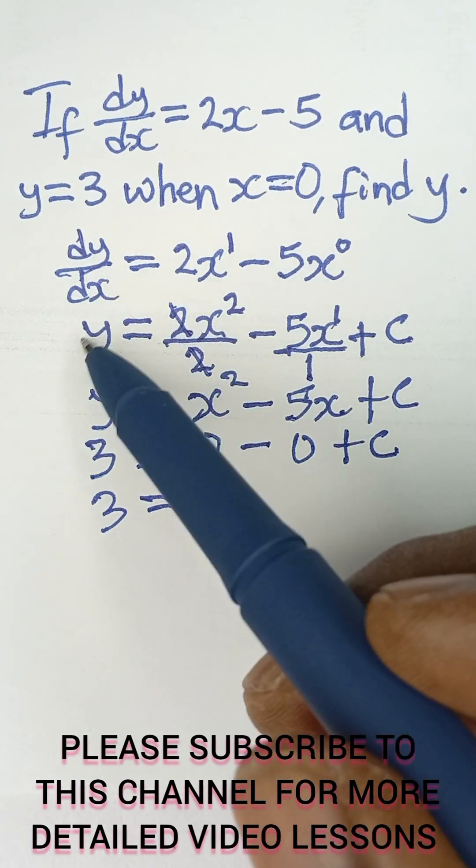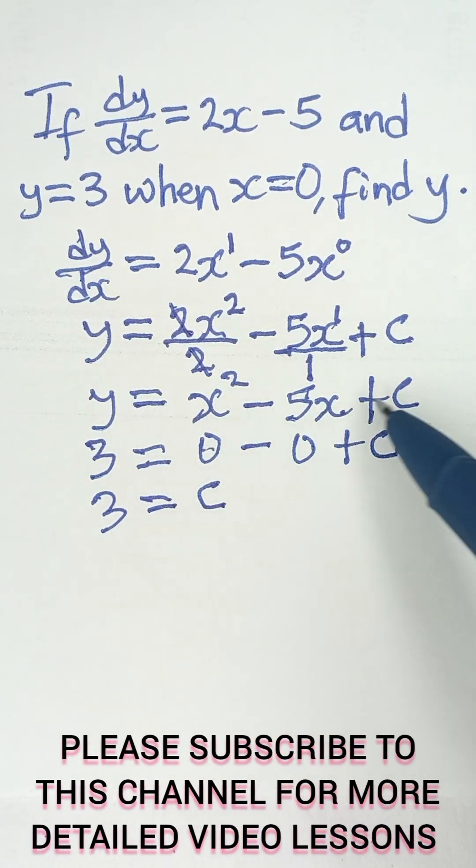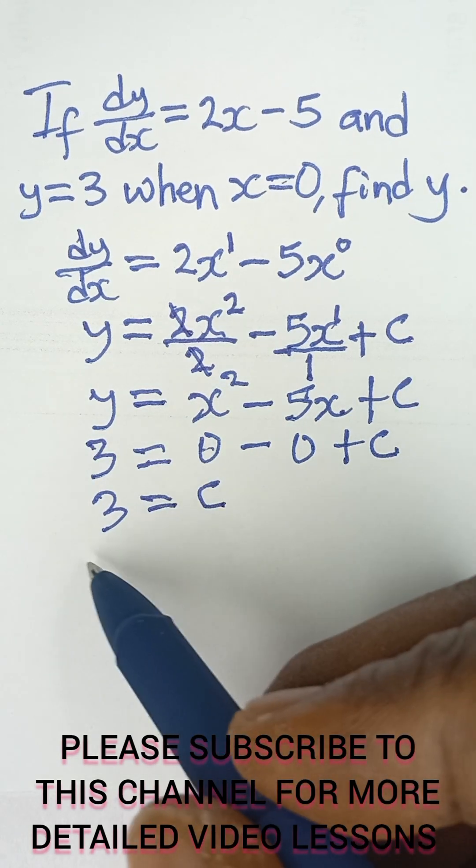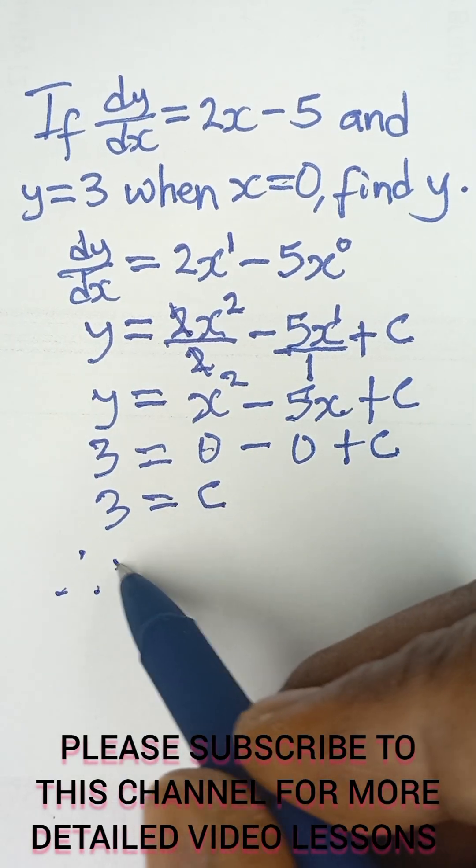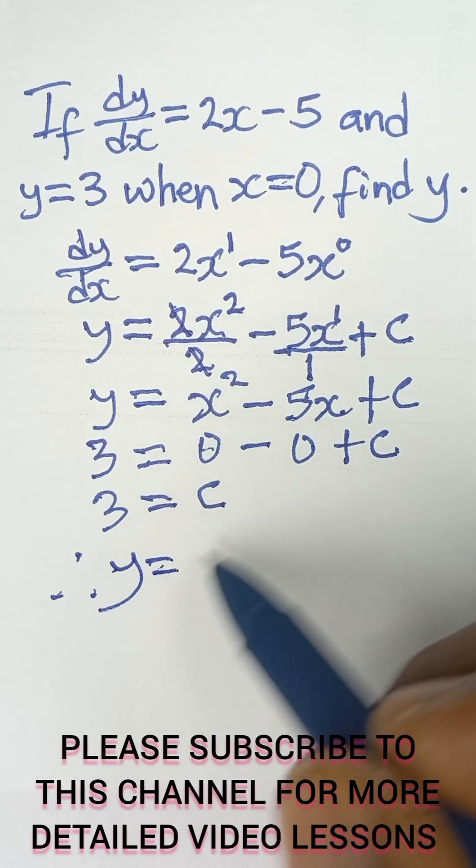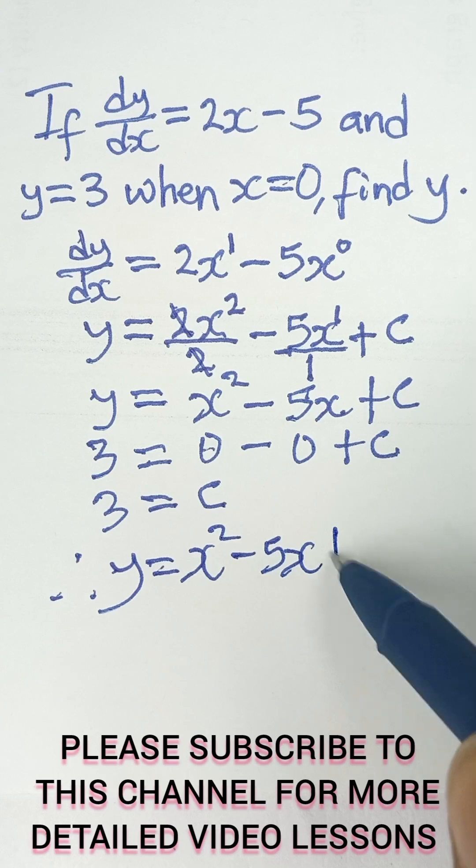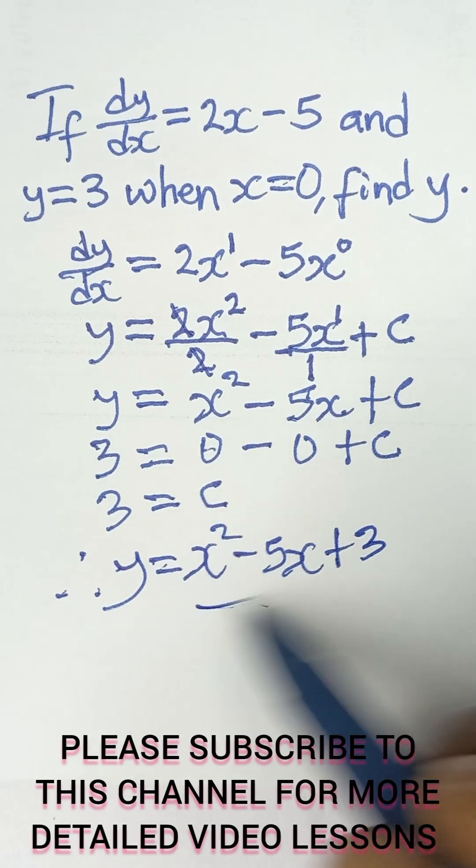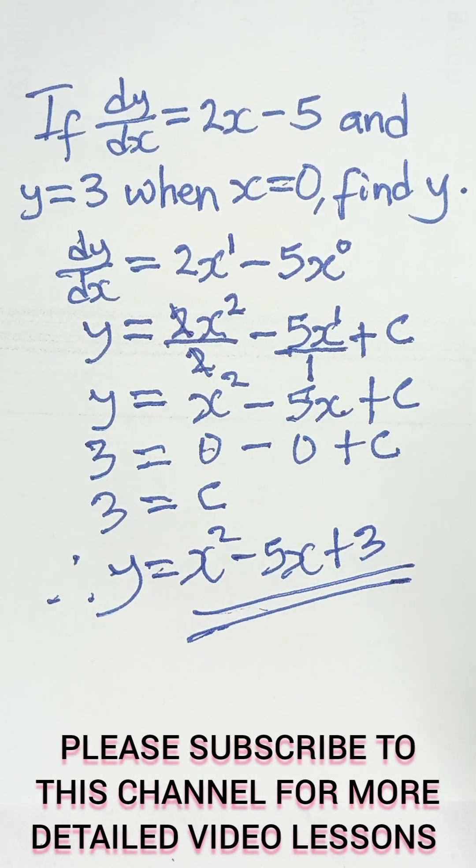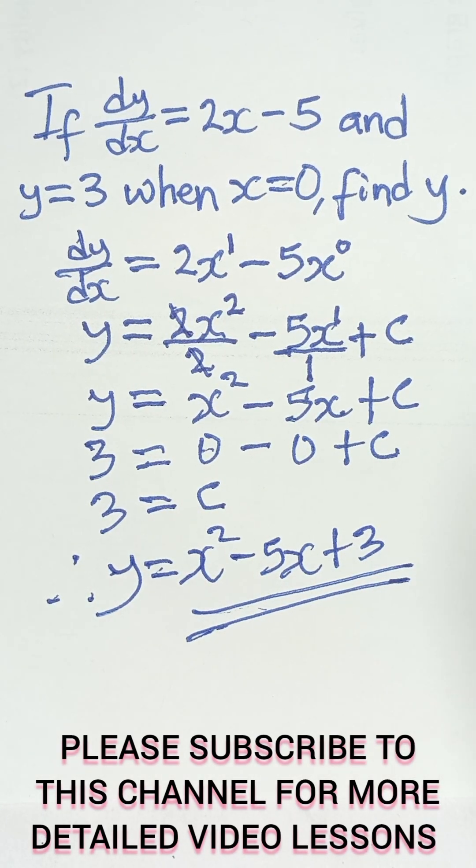So we can now go back to the value that we obtained, the original expression, and put 3 as the value of c to obtain finally y. So we say y is equal to x squared minus 5x plus 3. And that's the final answer. So please subscribe for more videos. Thank you.